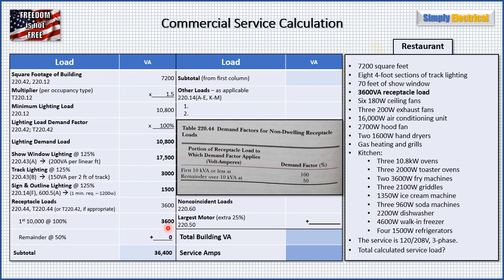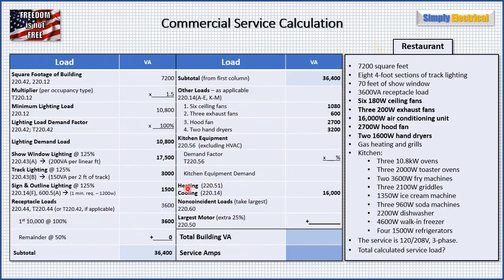Now that we have all those values — the lighting demand load, show window, track, sign and outline lighting, and receptacle loads after demand factor — we add them up. The total we come up with is 36,400 VA. We slide that number right up to the top of the next column: 36,400.